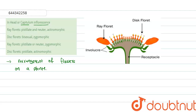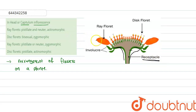In the capitulum inflorescence, the main stem or main axis of the plant becomes flat. This flattened structure is called the receptacle. In the capitulum, two types of flowers are present.